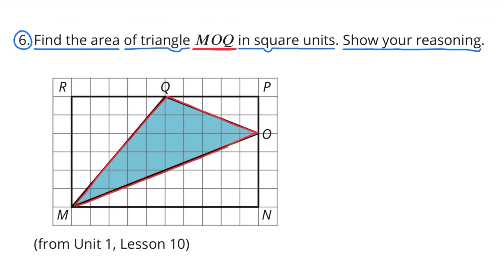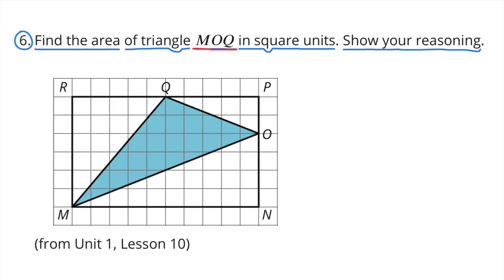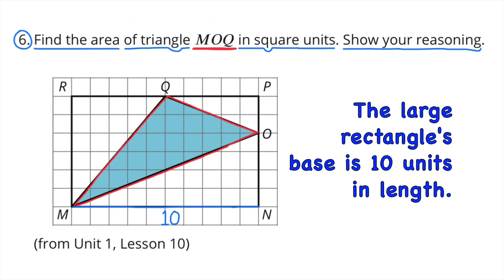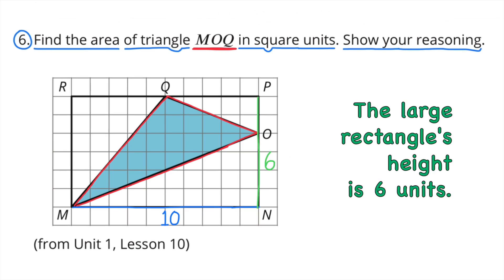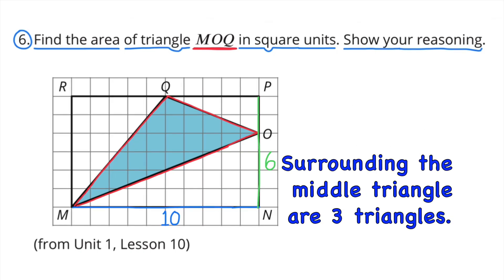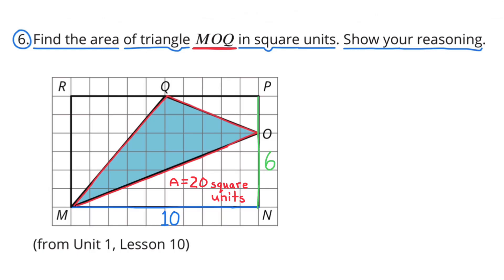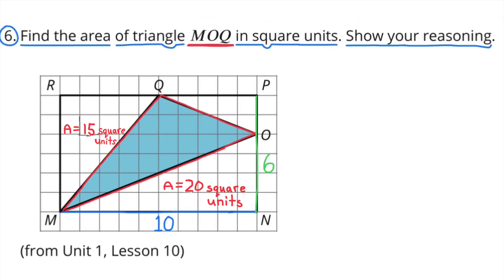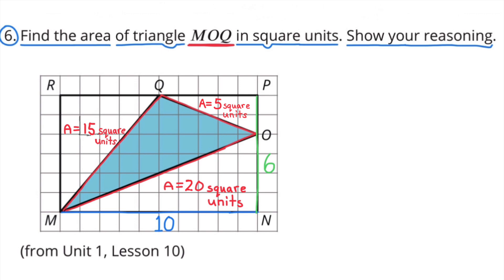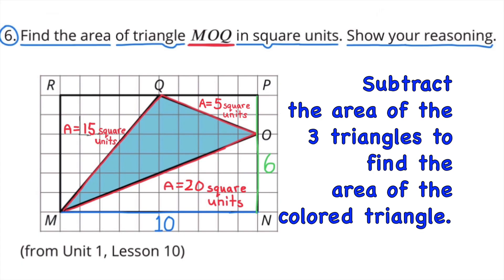Number 6. Find the area of triangle MOQ in square units. Triangle MOQ is colored blue, and it sits inside a larger rectangle. The large rectangle's base is 10 units in length and its height is 6 units. Surrounding triangle MOQ are 3 smaller triangles. One of these smaller triangles has an area of 20 square units, the second has an area of 15 square units, and the smallest has an area of 5 square units. Subtract the area of the 3 triangles to find the area of the colored triangle MOQ.